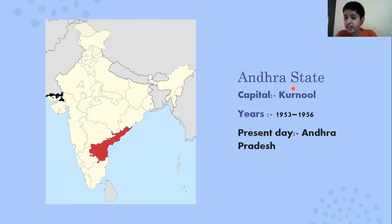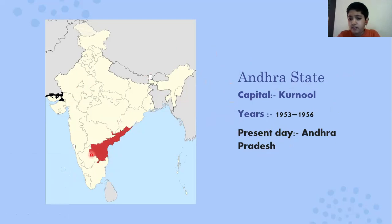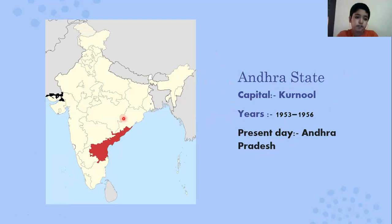It is now a district called Ajmer in Rajasthan. Our next state is Andhra Pradesh, which existed from 1953 to 1956. It is present-day Andhra Pradesh but there have been some changes to its districts.